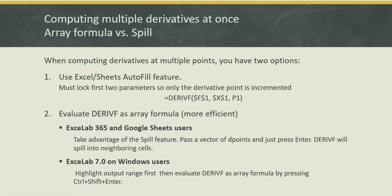One important difference I'd like to emphasize between the different versions of Excelab on Windows versus Apple Macs and Google Sheets is the way you would deal with array formulas. If you need to compute DERIVF at a single point then it's straightforward, you just have to type the formula and hit Enter and you get a single result back. But if you have to compute multiple derivatives at once it's more efficient to pass a vector and get the derivatives at once.